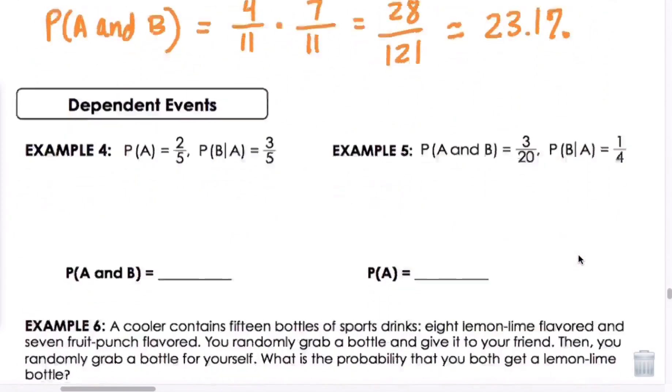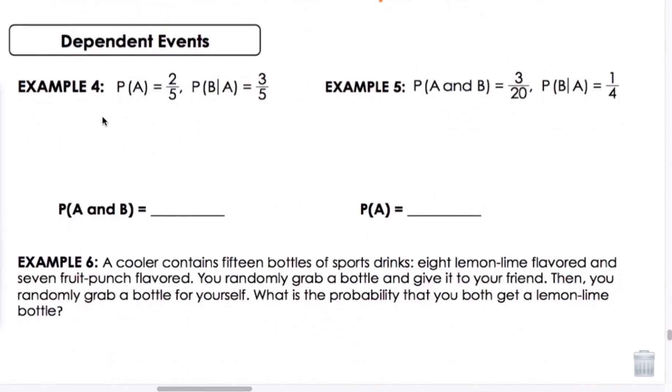Now let's look at some dependent events. In the first two examples, we're using the formula. So we know we have P of A is 2 fifths, P of B if A is 3 fifths. So P of A and B is going to be P of A, 2 fifths, times P of B if A already occurred. So that would be our 3 fifths, which will give us 6 out of 25.